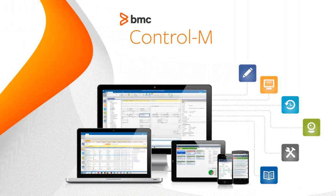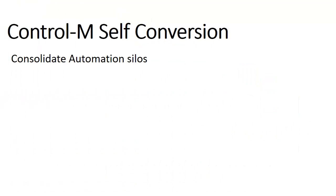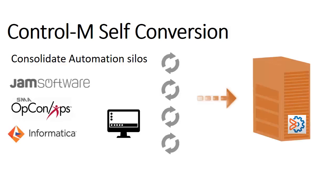Running your business flow through Control M gives you a single point of control, visibility and security. In addition, you can see predictive alerts in case of future problems. Therefore, many customers want to bring their automation silos into Control M. Control M self-conversion enables you to consolidate automation silos from any scheduler, business application or homegrown application and converts them into Control M job flows.